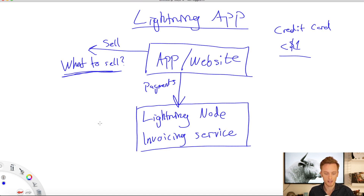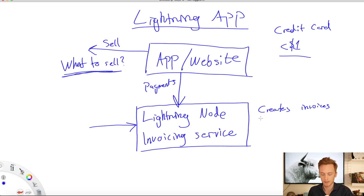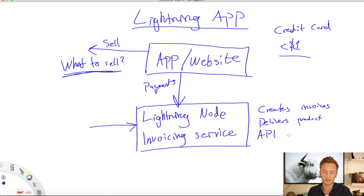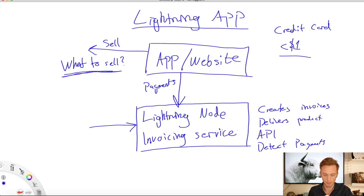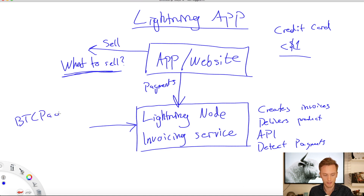The second difficult part is the technical setup. How can I have a Lightning node and an invoicing service that creates invoices, delivers the product, and provides an API that I can use to create invoices, check their status, and detect payments? That is a difficult part. However, there is a solution that is relatively easy to install.